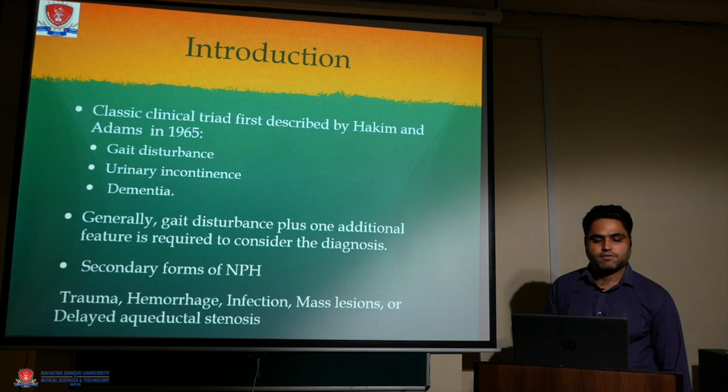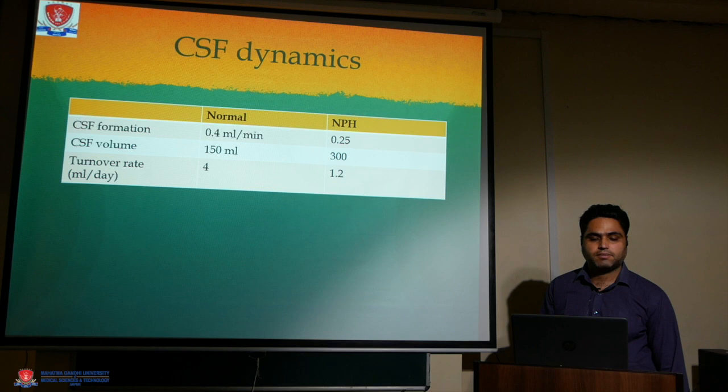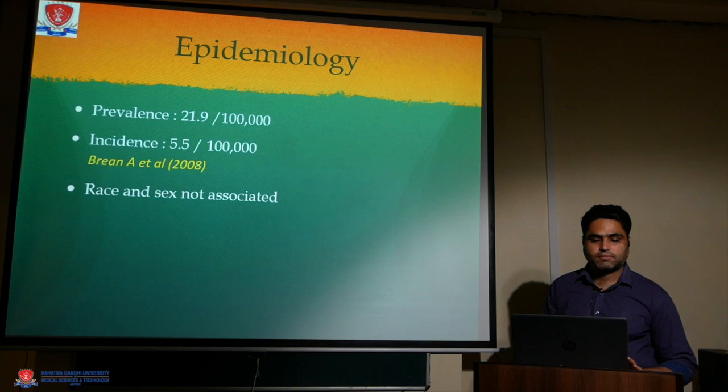Secondary forms of NPH include trauma, hemorrhage, infection, mass lesions, or delayed aqueductal stenosis. Regarding CSF dynamics: CSF formation is normally 0.4 ml per minute, reduced to 0.25 in NPH. CSF volume is normally 150 ml, increased to 300 ml in NPH. Turnover rate is normally 4 ml per day, reduced to 1.2 in NPH. Pathophysiology involves increased venous resistance and altered expression of molecules regulating CSF production and reabsorption.